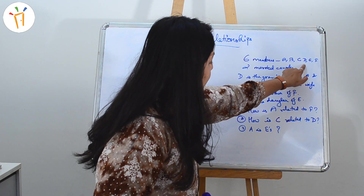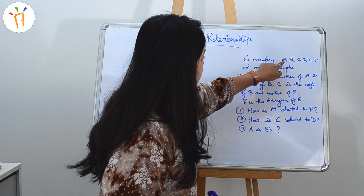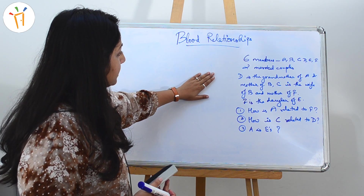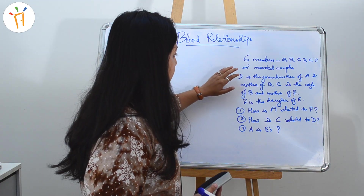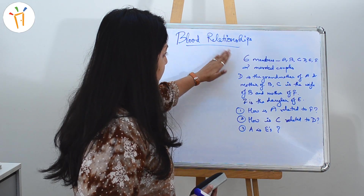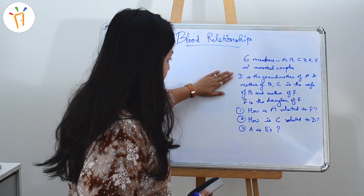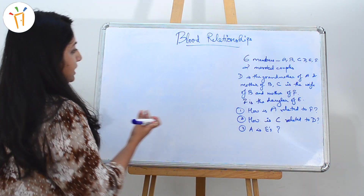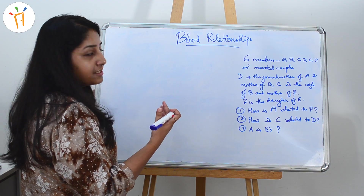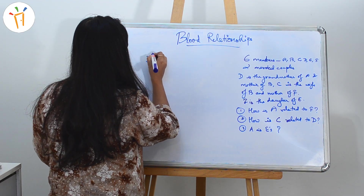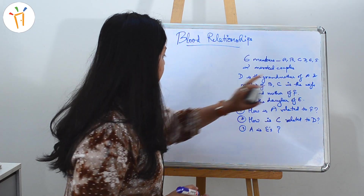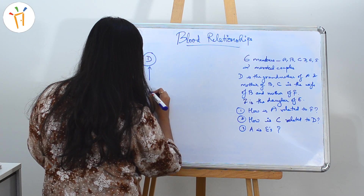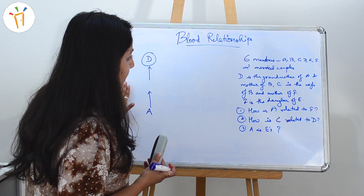Let's start with drawing the symbols. There are six members and two married couples — let's keep that aside for a while. Starting with the first line: D is the grandmother of A and mother of B. So D is female and of the second generation — let's denote D with a circle. D is the grandmother of A, so let's write A here with one generation in between, keeping it blank for now.